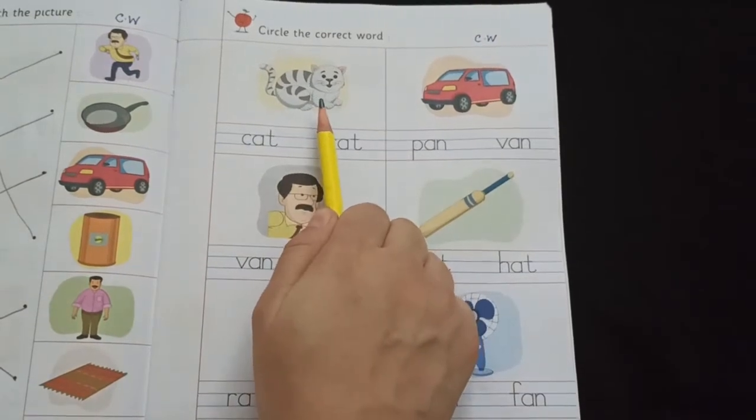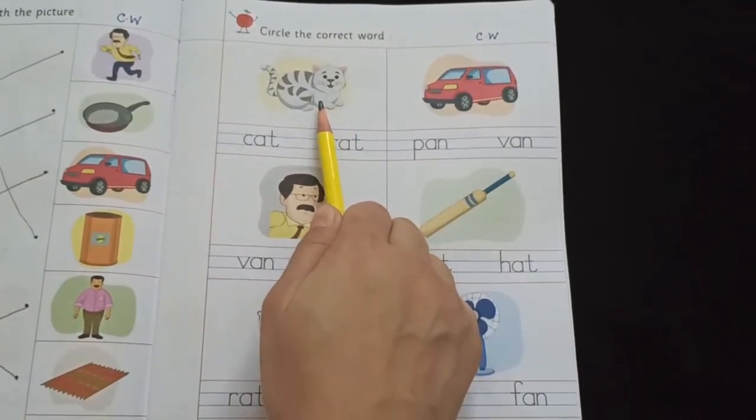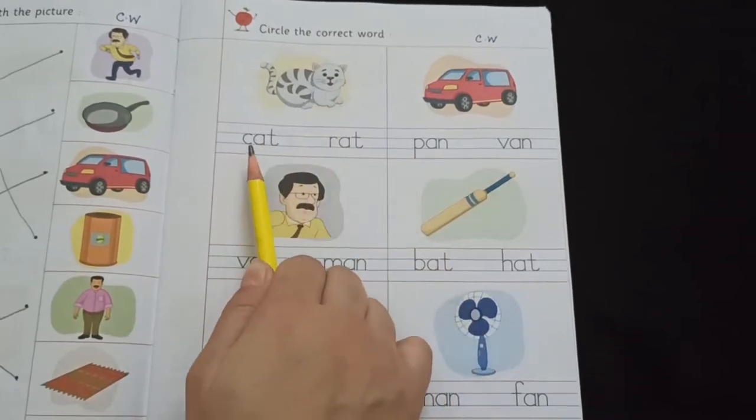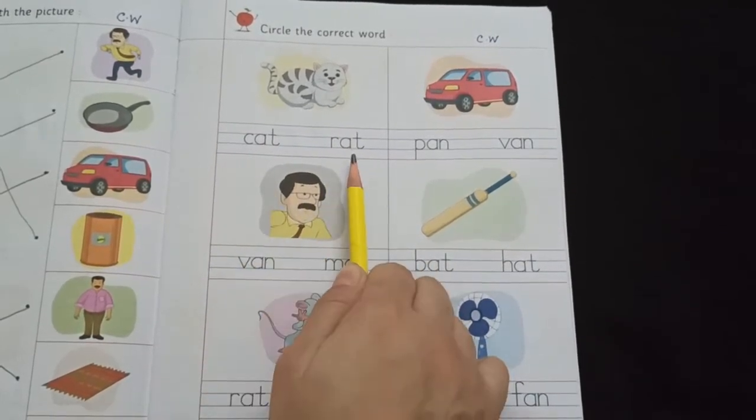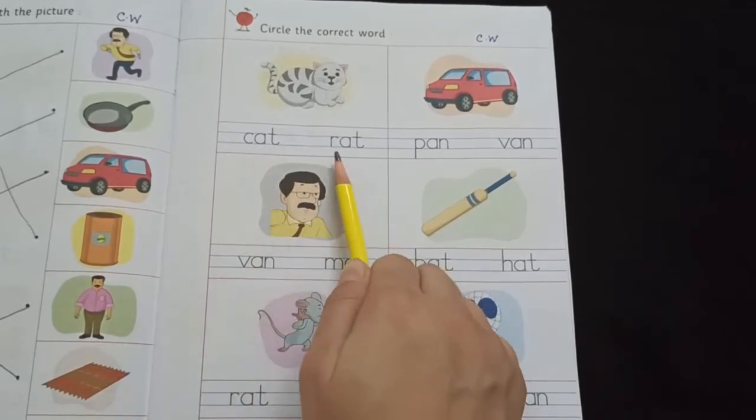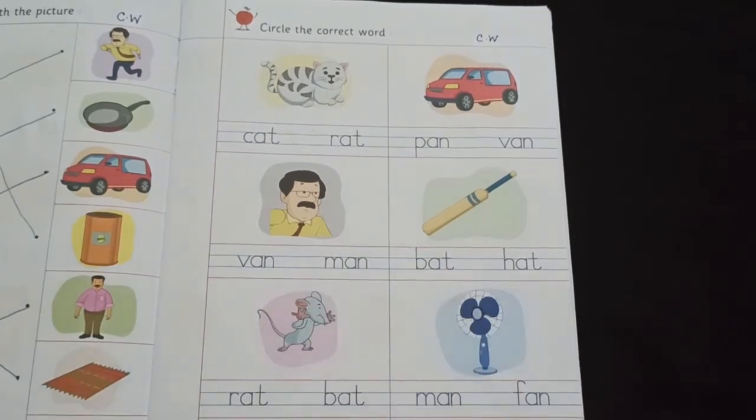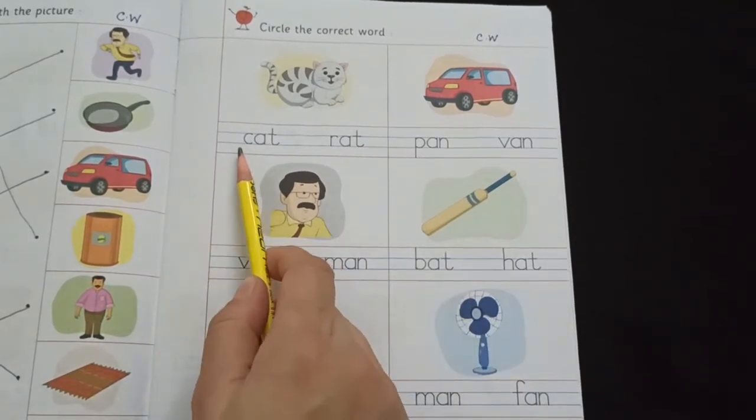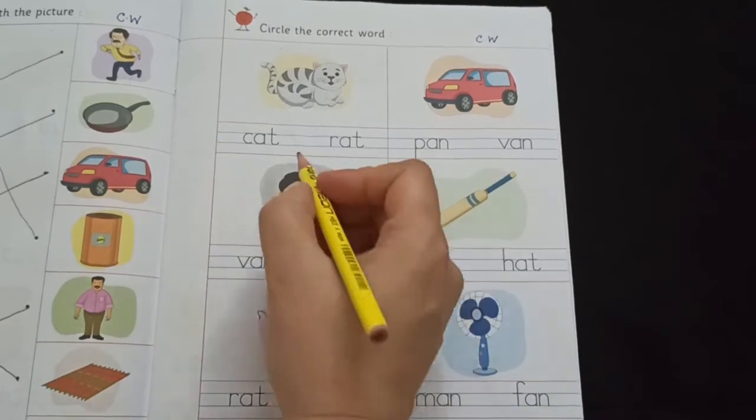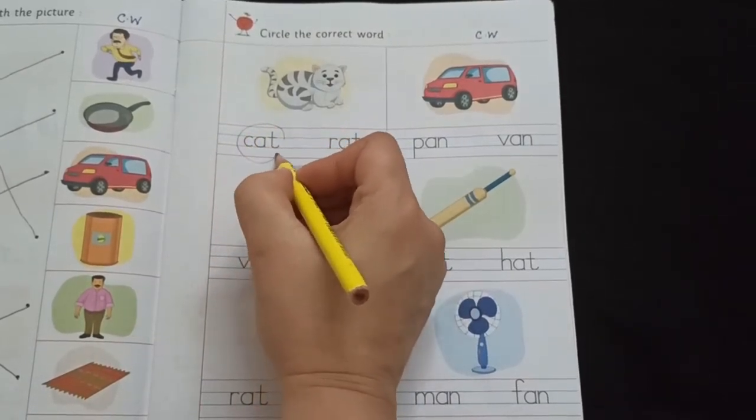See the first picture. The first picture is of a cat. Isn't it? Okay. And now we will read the words. C-A-T, cat. R-A-T, rat. So, which one is correct? Yes. C-A-T. Now put a circle. Yes.